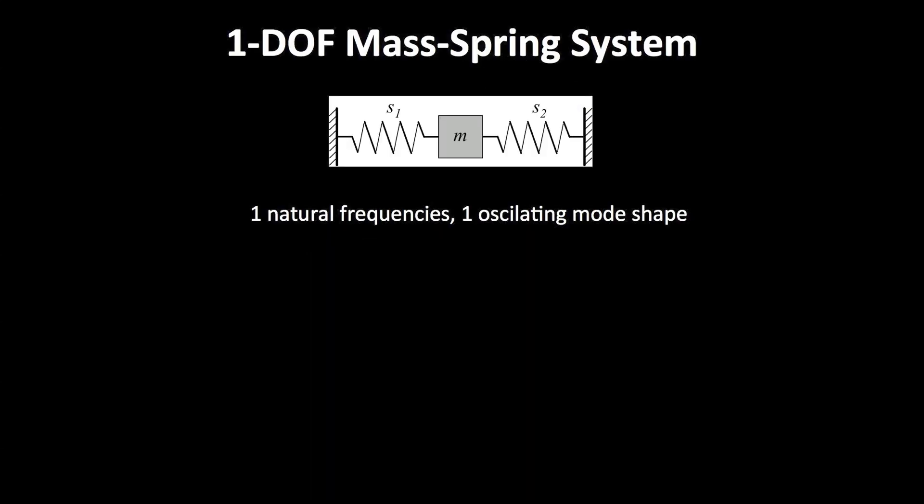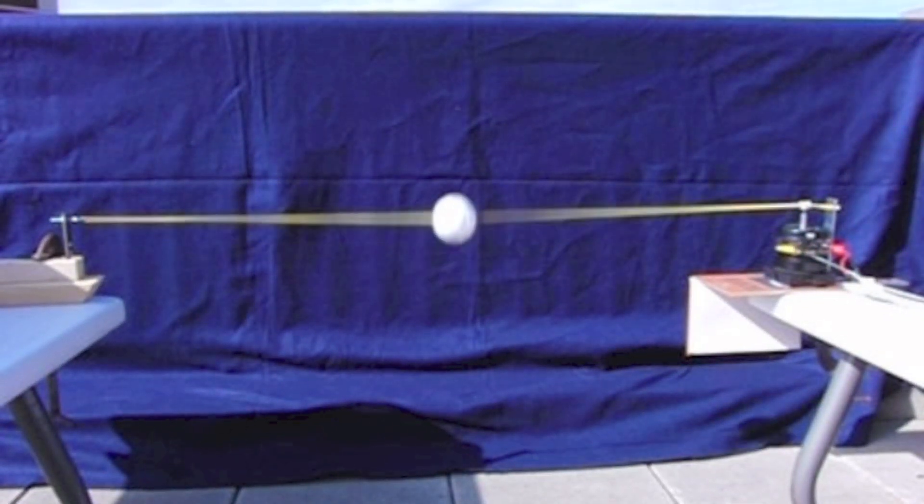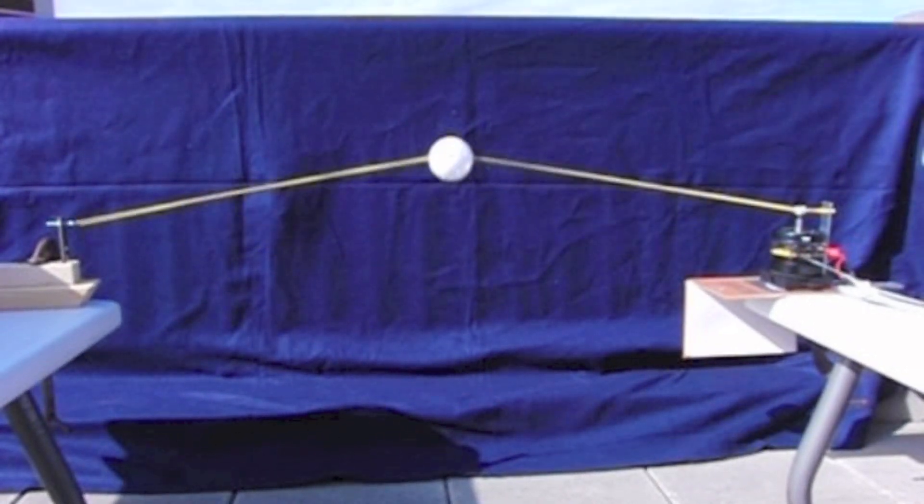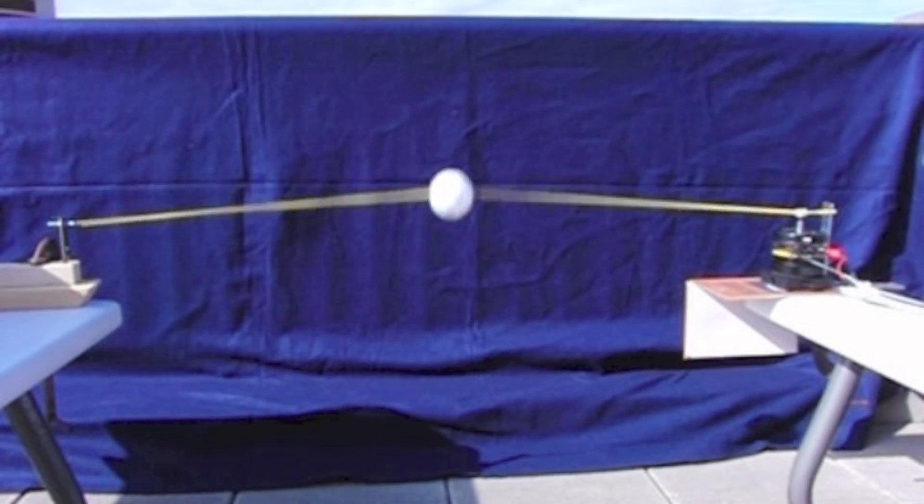A one degree of freedom mass-spring system has one natural frequency and one vibrational mode shape. The mass oscillates back and forth, or in this case up and down, at a frequency that depends on the inertia and elastic properties of the system.